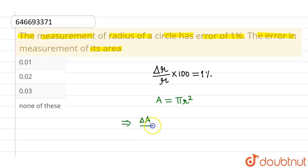then this will be ΔA/A × 100 and this will be equals to 2 times of Δr/r × 100.